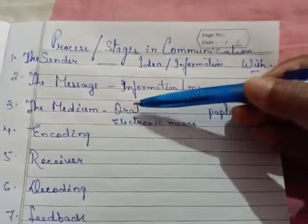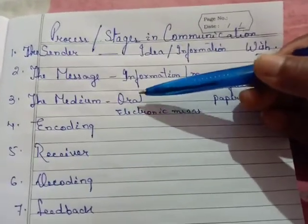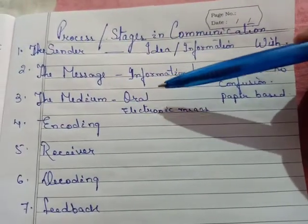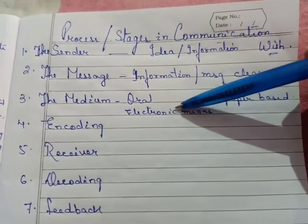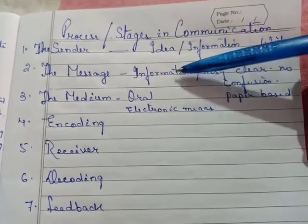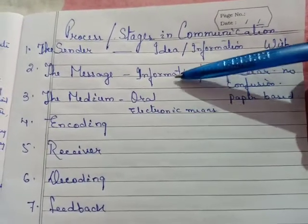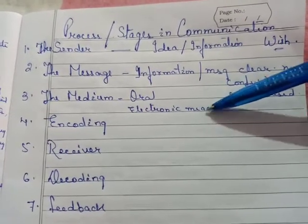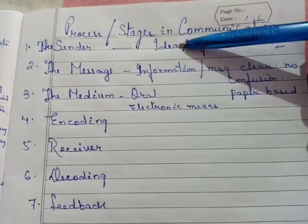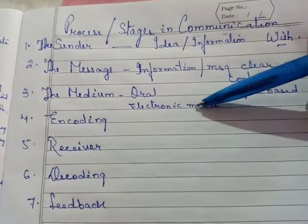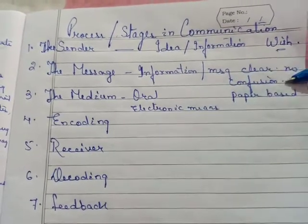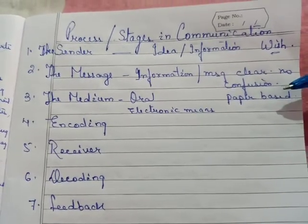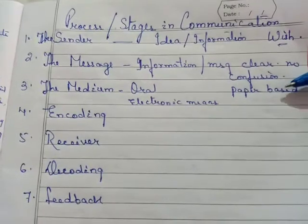Oral is a form of spoken communication. By the help of the spoken form, the sender can send the message. Or the sender can choose electronic means. Electronic means includes fax, email, and telephone. So the sender can also send their information by the help of electronic means. Or the last medium is paper-based.